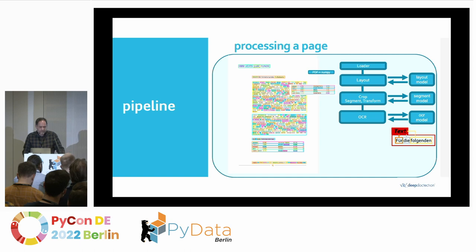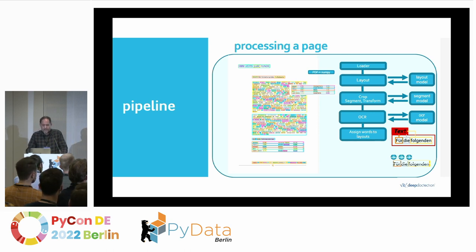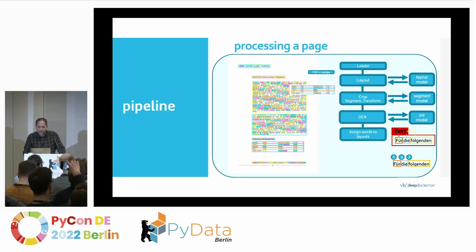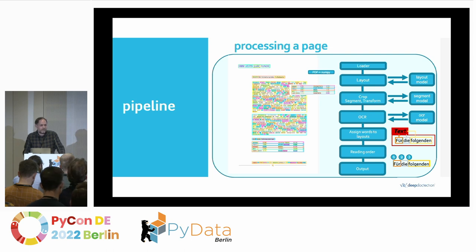The next step is to perform matching in order to match the text bounding boxes with the underlying layout structure recovered earlier. After that, you need to group and order the text and word information to get proper flowing text. At the final step, you need to create an output structure which you can load into your favorite NLP library.